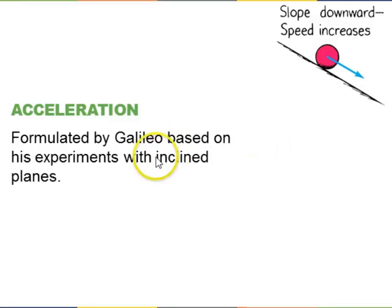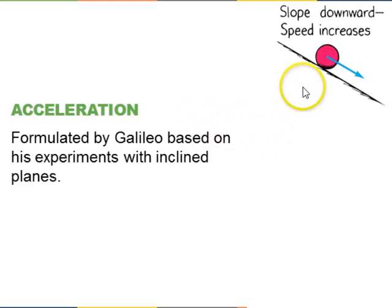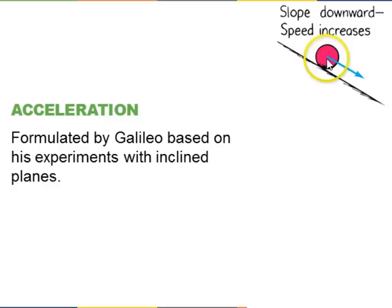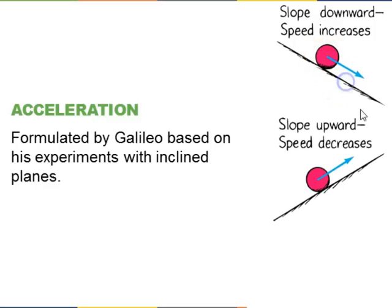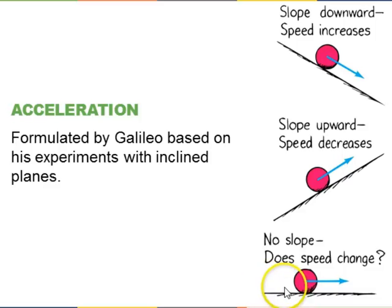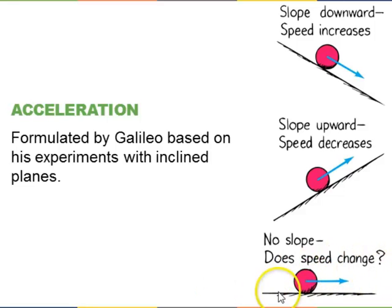Acceleration was first investigated by Galileo back around the year 1600, based on his experiments rolling marbles on inclined planes — pieces of wood that were at an incline. He found that if a marble was rolling down a slope, its speed increased; if rolling up the slope, its speed decreased. Galileo also thought about what if there was no friction and no slope — he felt the speed would not change, a zero acceleration situation.